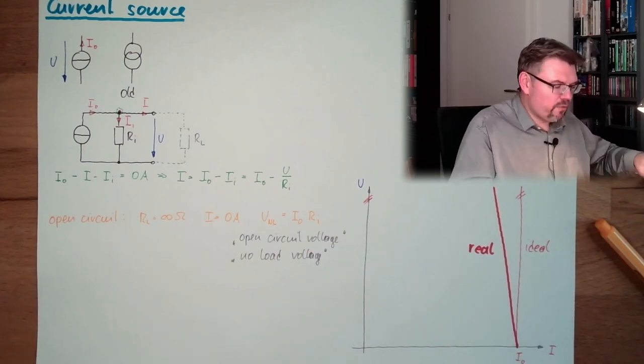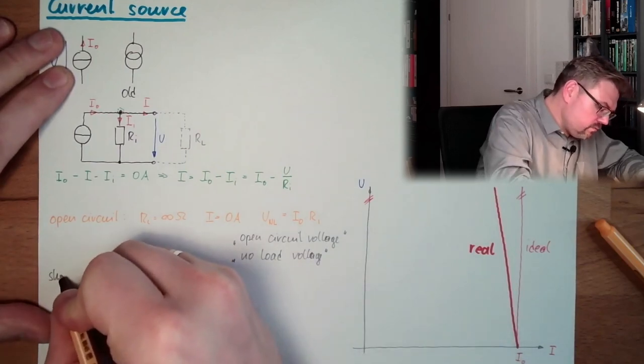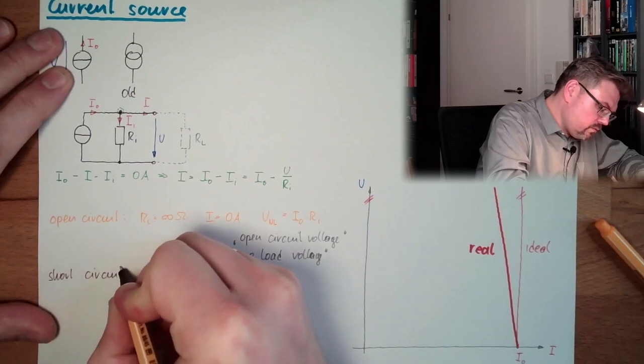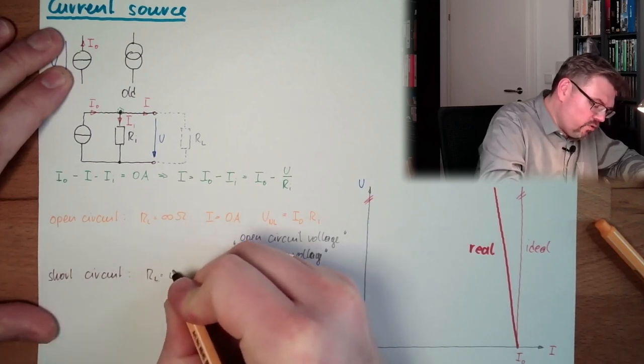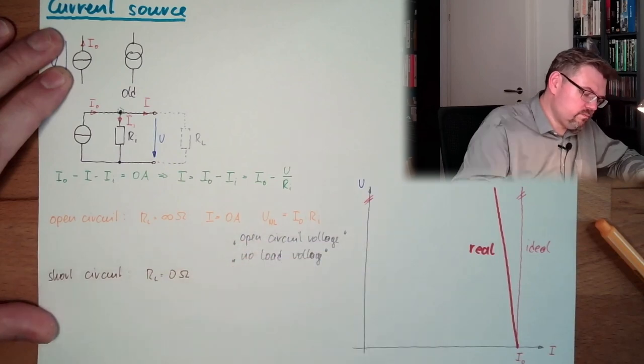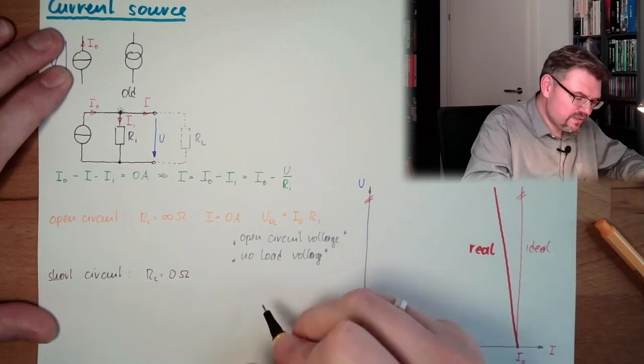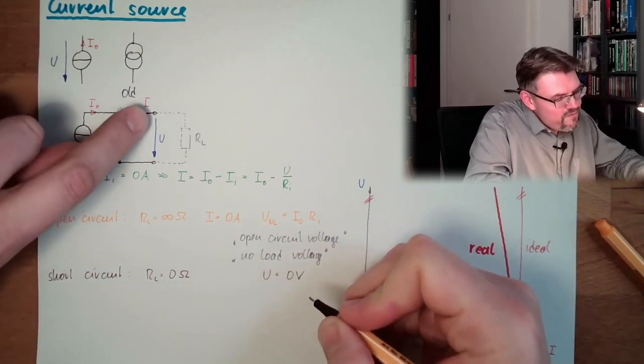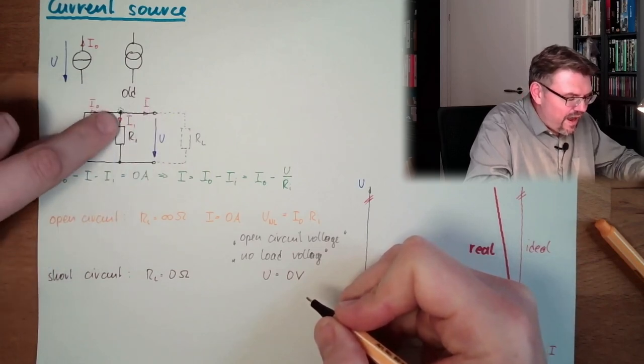And now the second operation scheme was short circuit. Open circuit. This means RL is zero ohm. This also indicates U is zero volts.